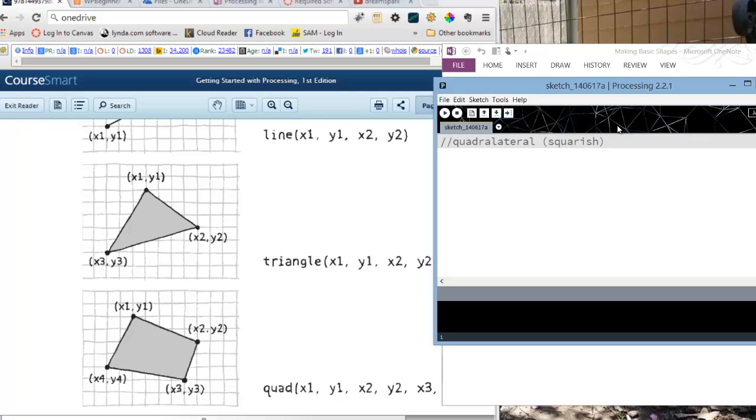And I always start by giving myself some notes. So quadrilateral, it's a squarish. It can be a square. A square is a format of it, but not all quadrilaterals are square. It could also be a rectangle. And then I need to know that I'm putting in the corners.